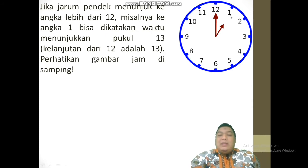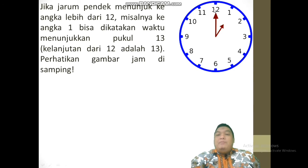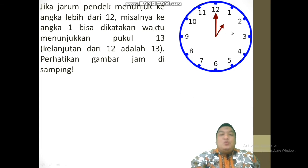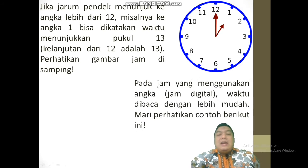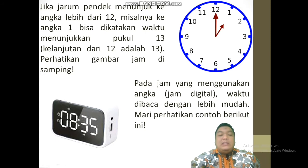Begitupun jika jarum pendek menunjukkan ke angka 2, berarti bisa dikatakan waktu menunjukkan pukul 14, kelanjutannya dari 12: 13, 14, 15, dan seterusnya sampai 24, habis itu kembali lagi ke angka 1. Pada jam yang menggunakan angka atau jam digital, waktu dibaca dengan lebih mudah. Contohnya ada jam digital pukul 08 lebih 35 — berarti waktu ini menunjukkan pukul 08 lebih 35 menit. Gampang, kalau membaca jam digital itu lebih gampang.